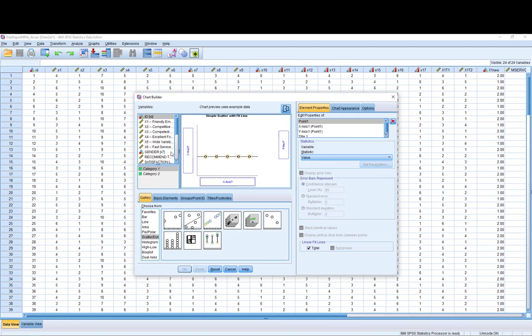I'm going to select my first variable which is variable X8 recommend to a friend and I drag that to the y-axis. As you can see it now says recommend to a friend on my y-axis. I then select my second variable which is X9 satisfaction level and I click and drag that to the x-axis.